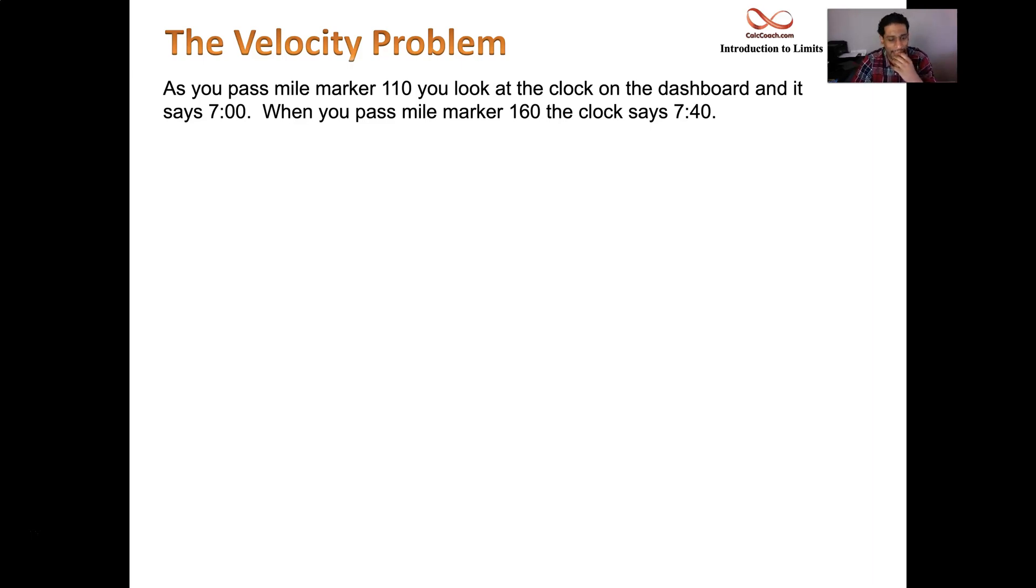So you're on a road trip and you look over at the mile marker on the side of the road and it says you're at mile 110. You have to notice the time and it's 7 o'clock. Later on you look over again and all of a sudden you're at mile 160 and you look at the clock and 40 minutes have passed. It is 7:40.